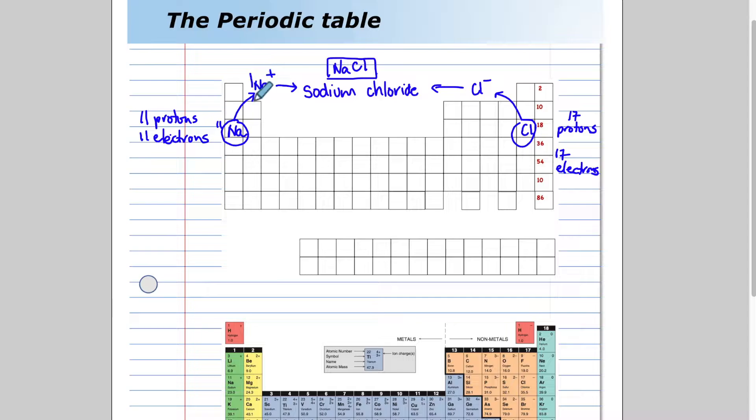What's important to realize when we're writing formulas is we need to understand that we need a zero pair. We need the same number of pluses as we do negatives, and that has to do with the Bohr models we've been drawing. Metals like to lose electrons, and non-metals like to gain electrons, so they make a good pair. The electron that sodium loses, chlorine will pick up, and that makes a compound.